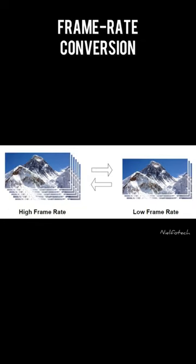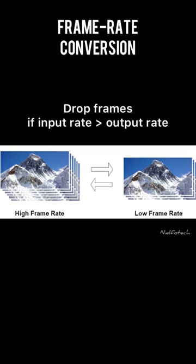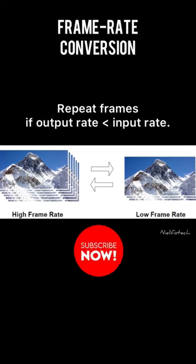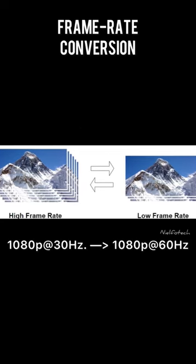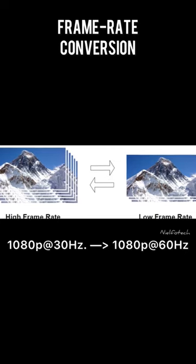Frame rate conversion: it increases or decreases the frame rate. It drops the frame if input rate is greater than output rate. It repeats the frame if output rate is less than input rate. For example, 1080p at 30 hertz into 1080p at 60 hertz.